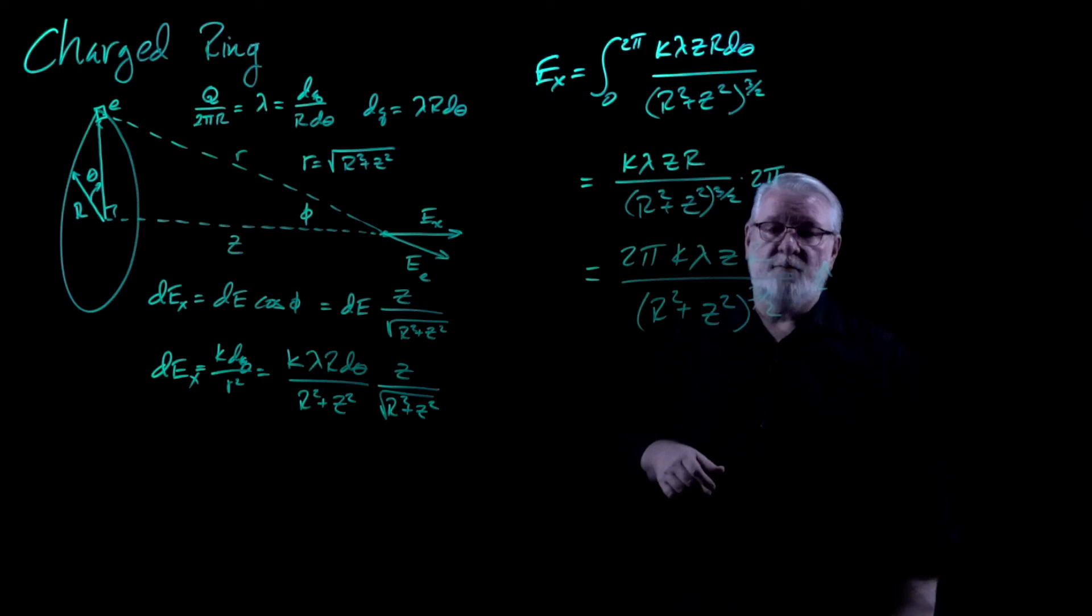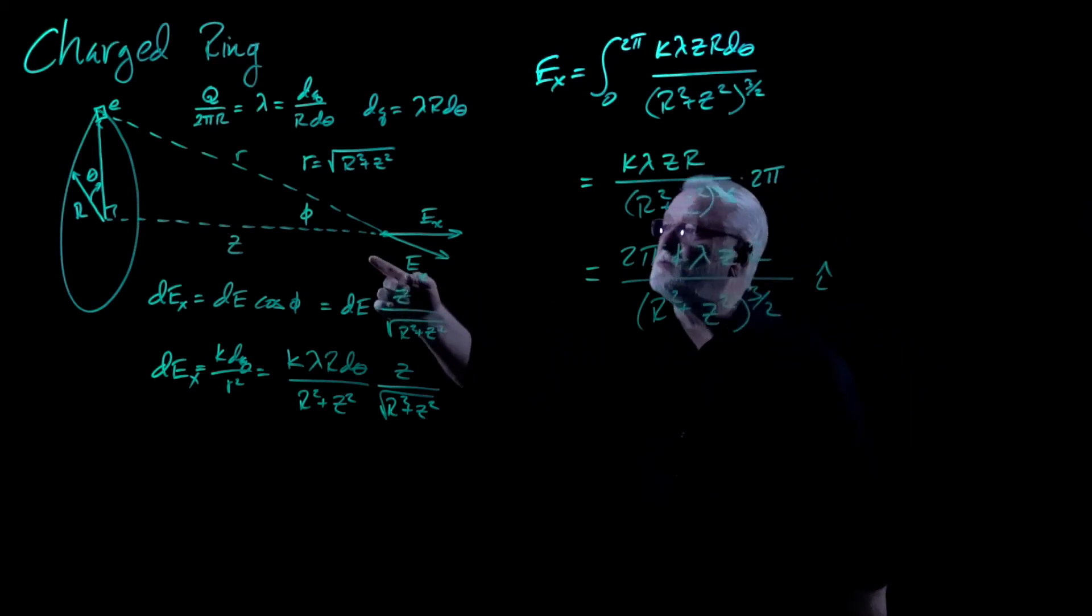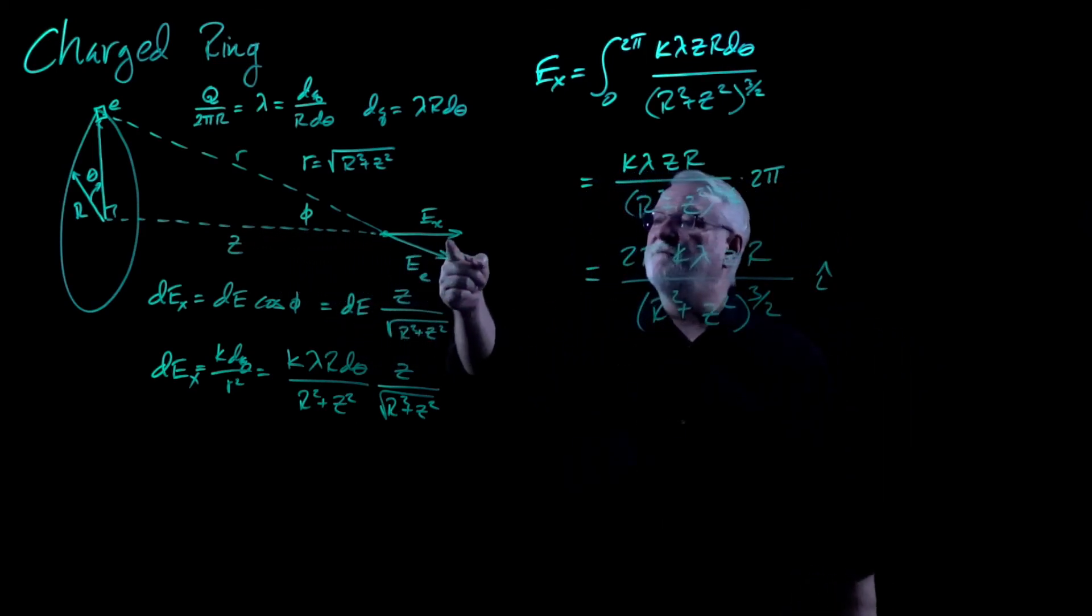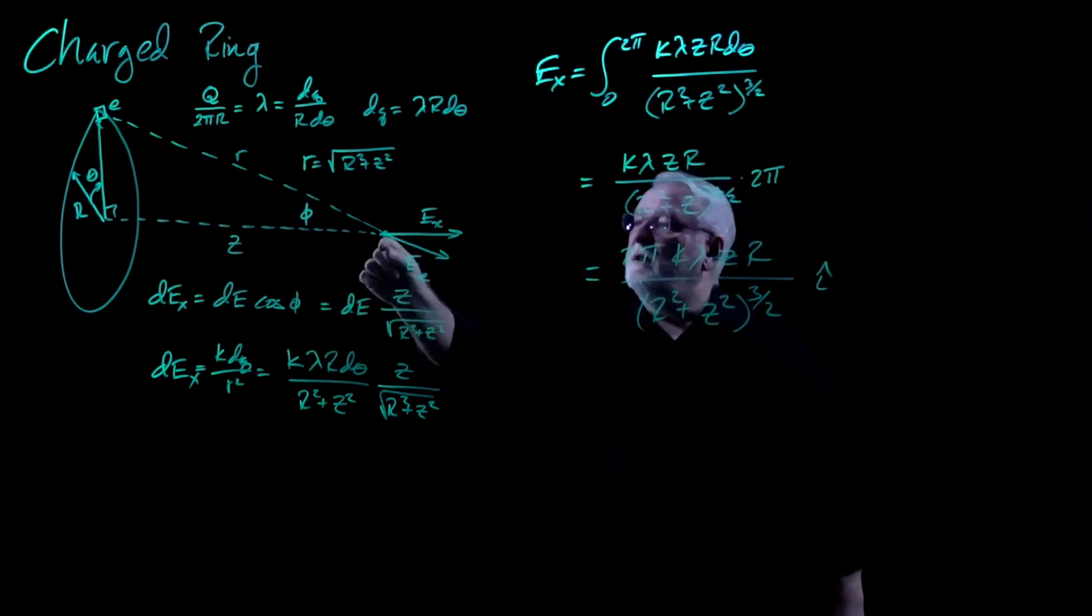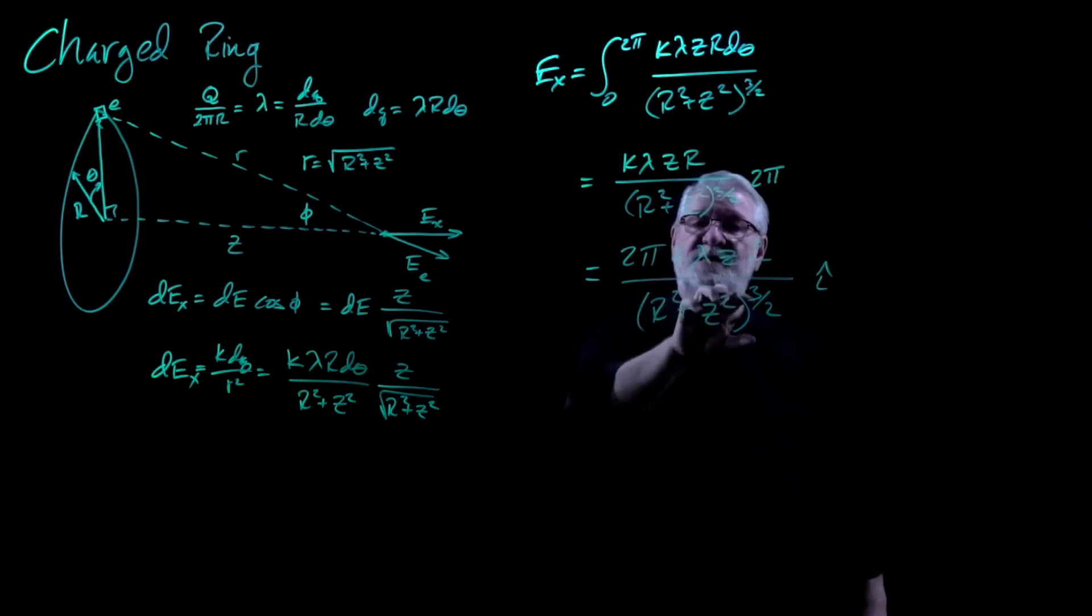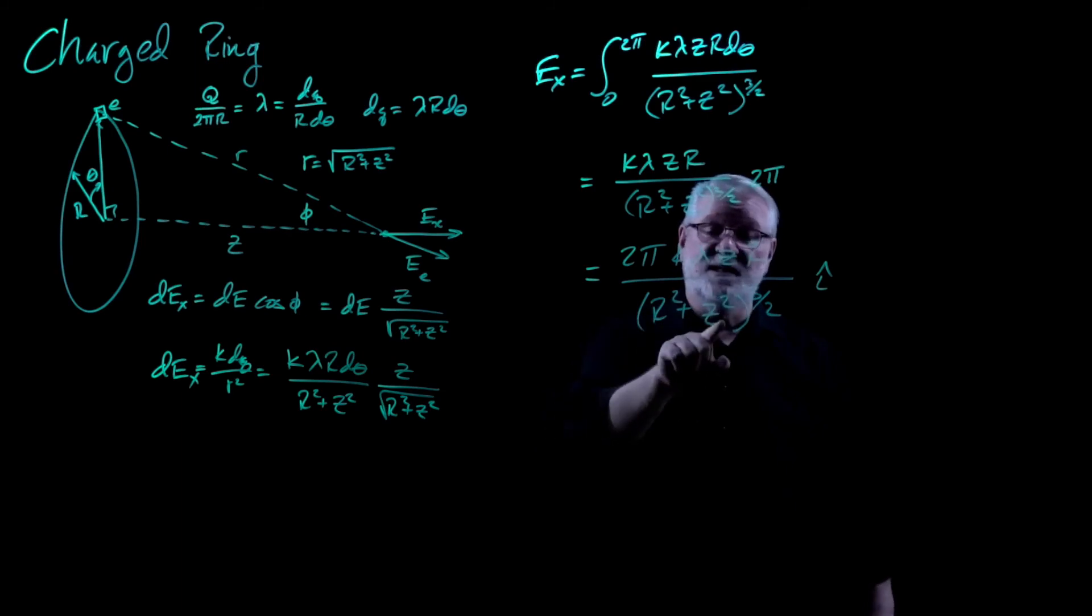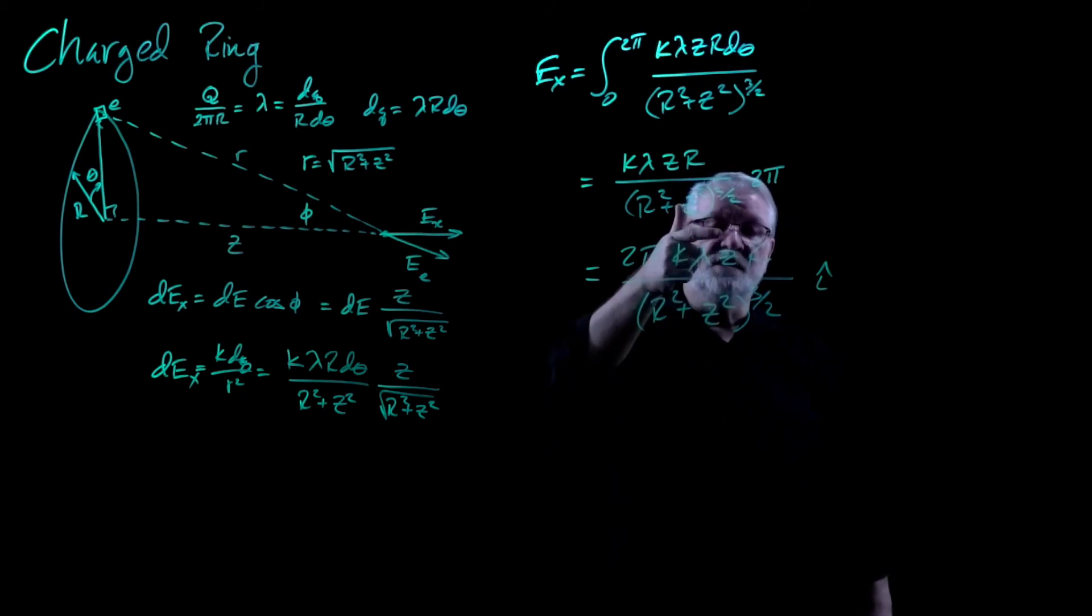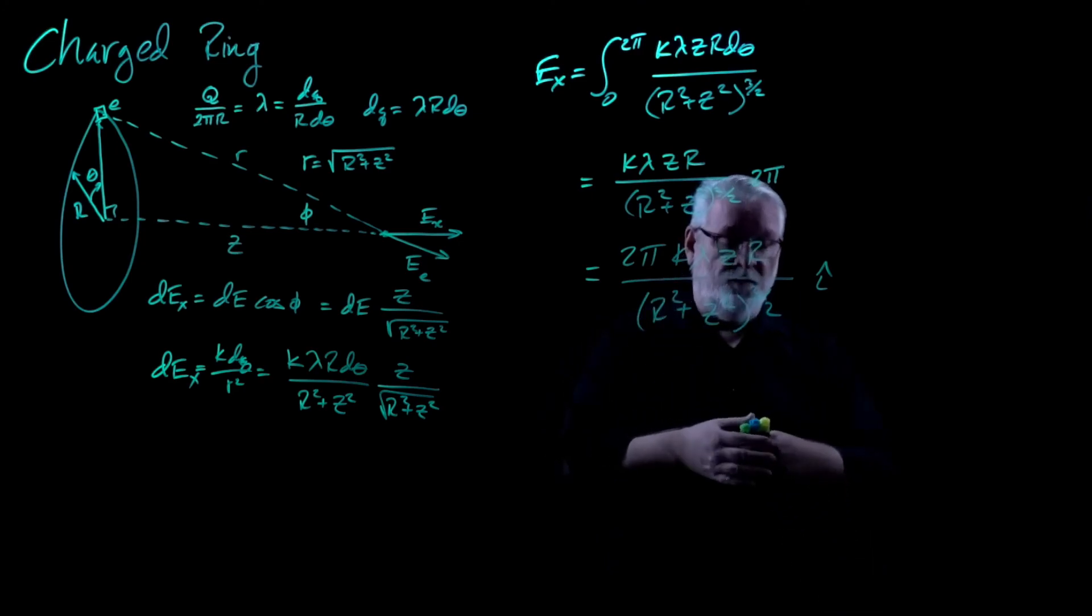What happens as we get further and further and further away? Well, the further we go, the larger and larger Z gets. So that this denominator, we can basically ignore the R value in the denominator, because in comparison to Z squared, R squared will be trivial or nothing. So we'll have Z to the three halves, which is Z cubed. Z over Z cubed is 1 over Z squared.